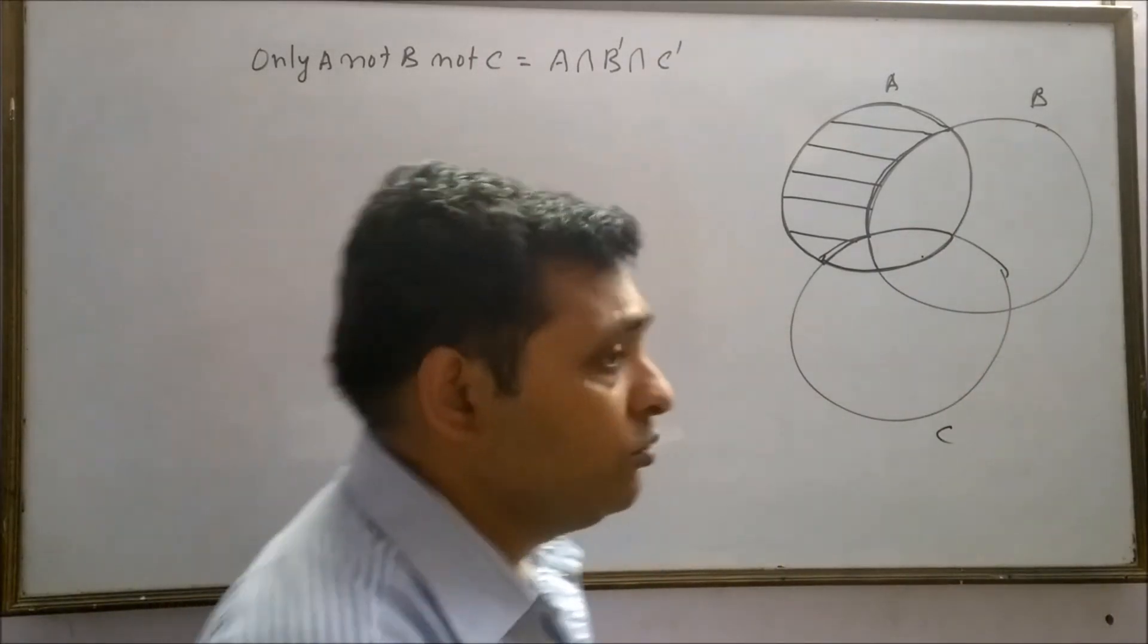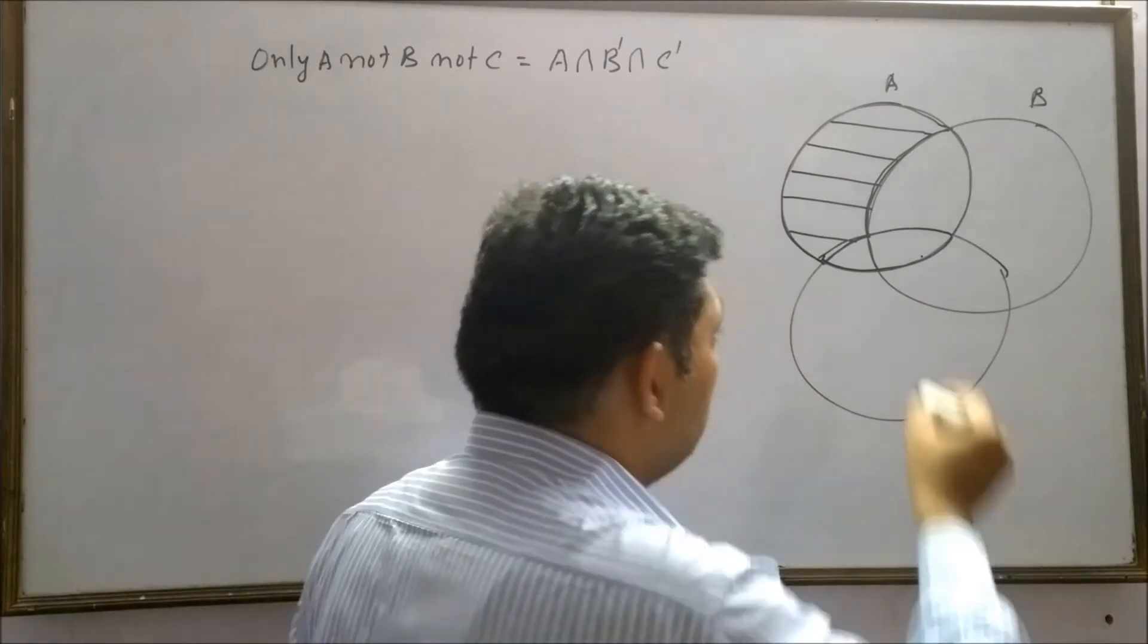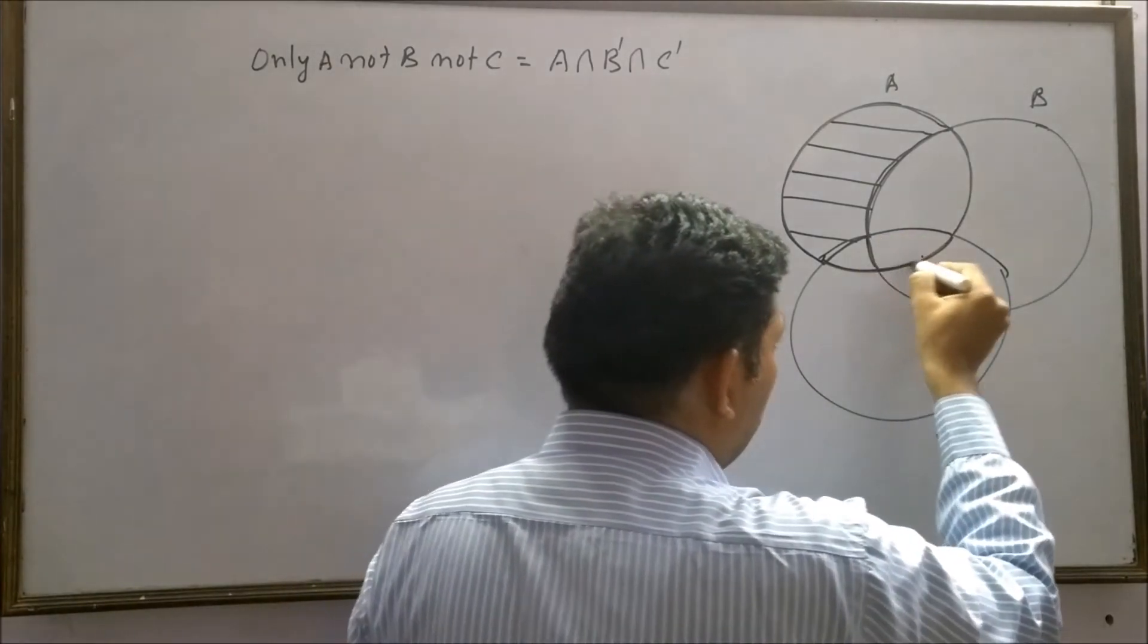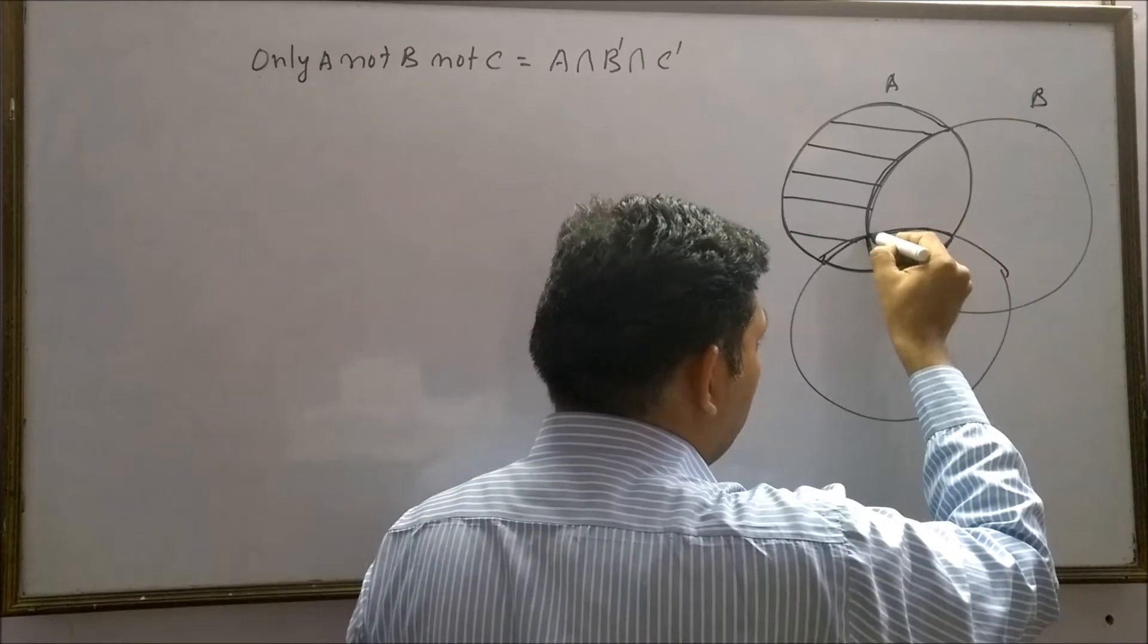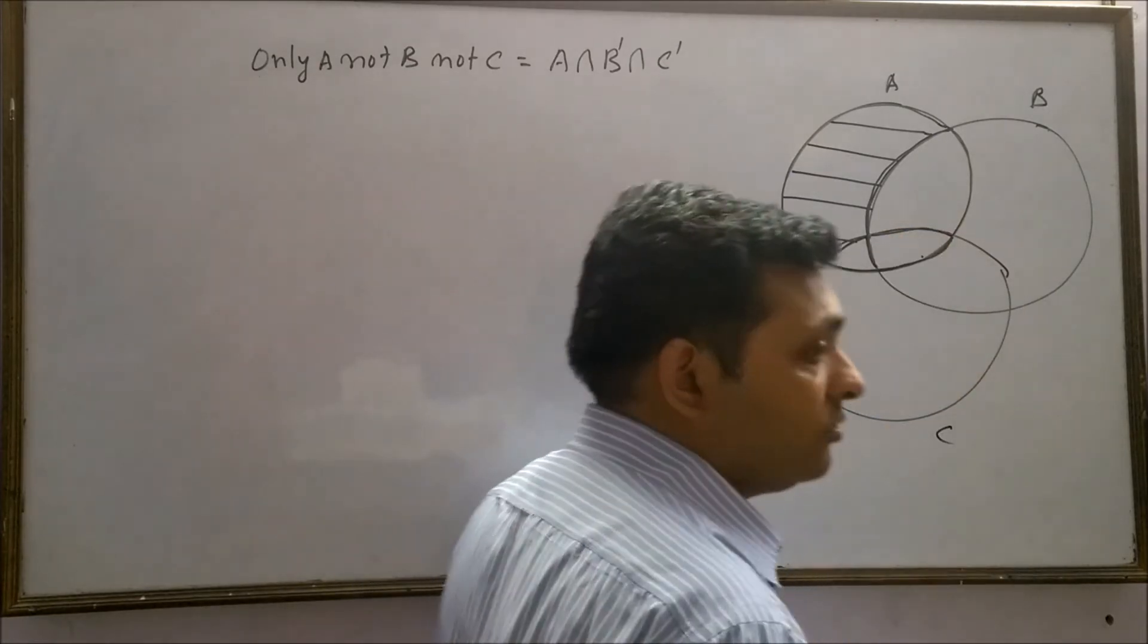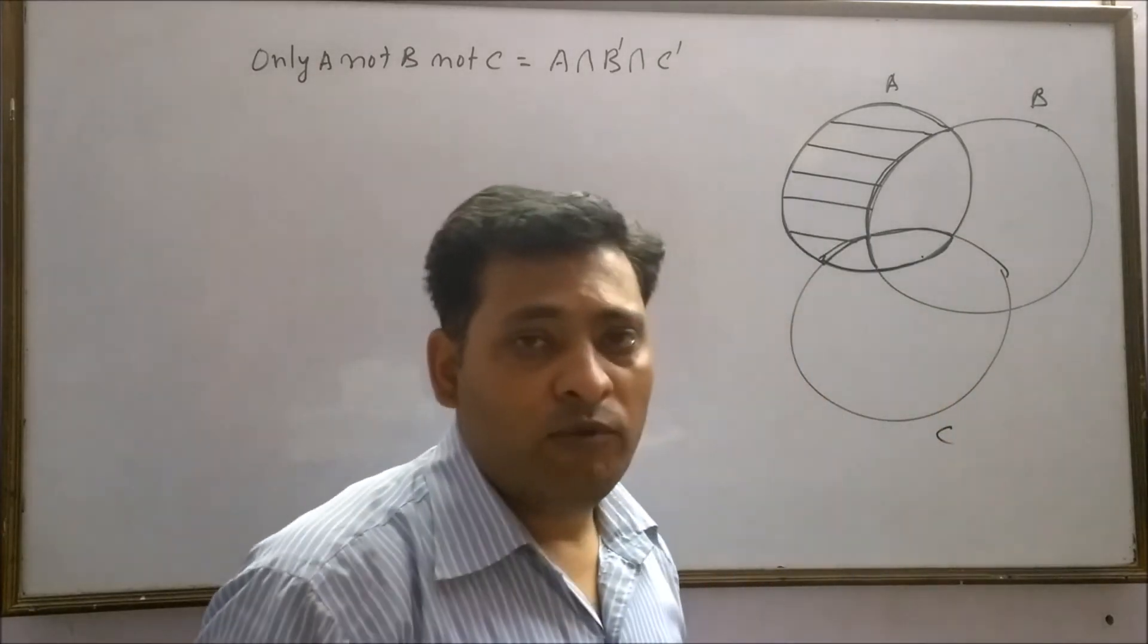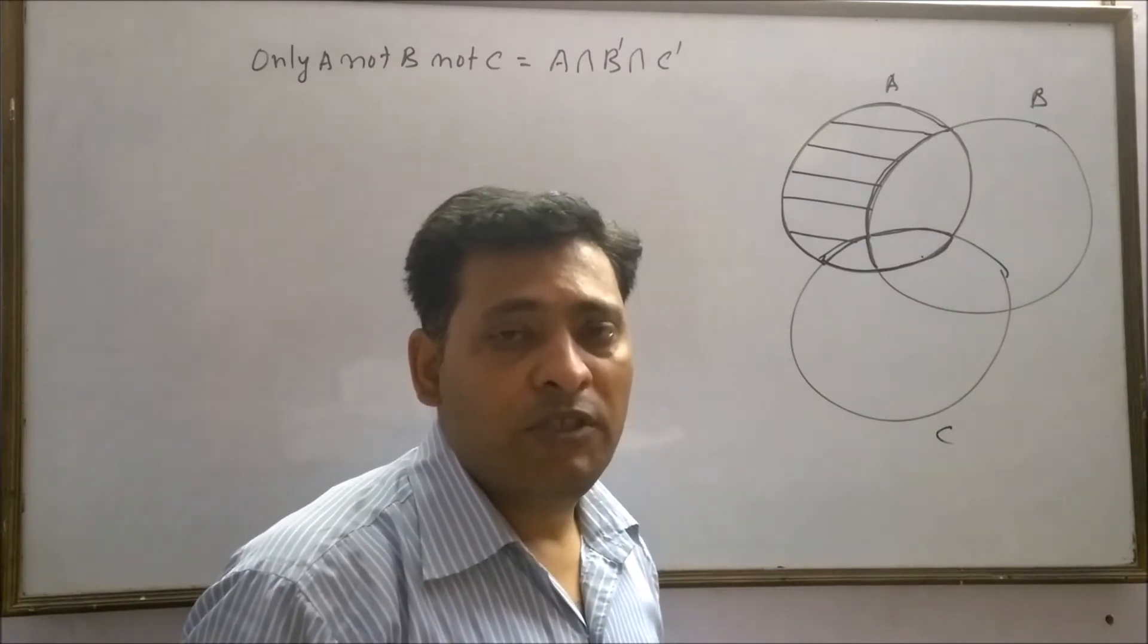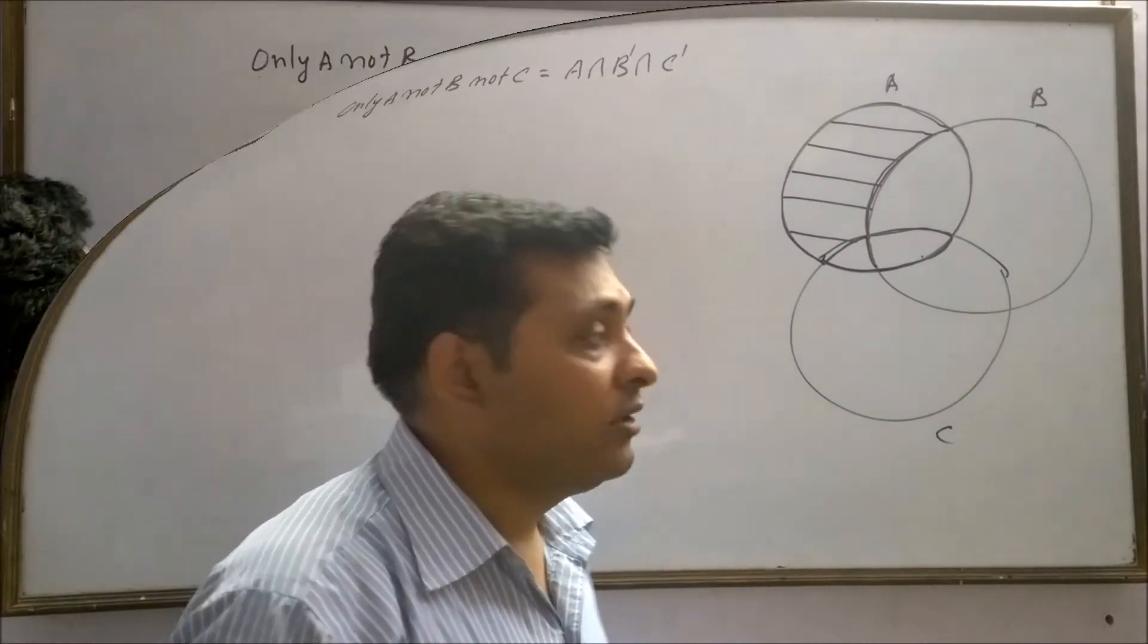One thing is to be noted here, this part which is A intersection B intersection C is removed two times. So we have to add A intersection B intersection C one time.